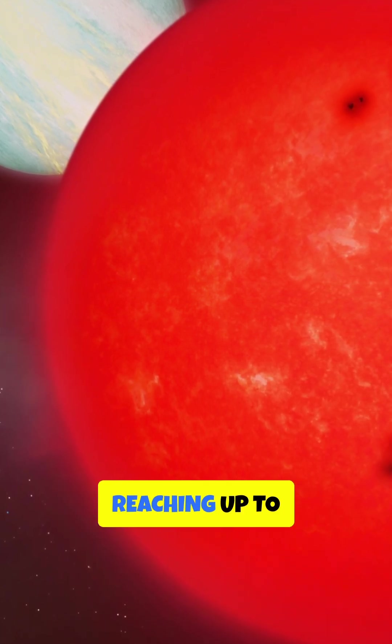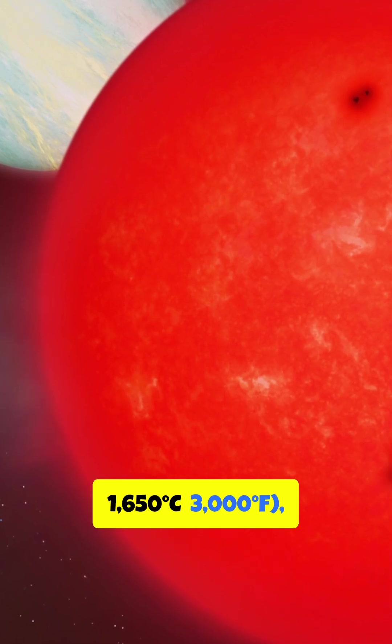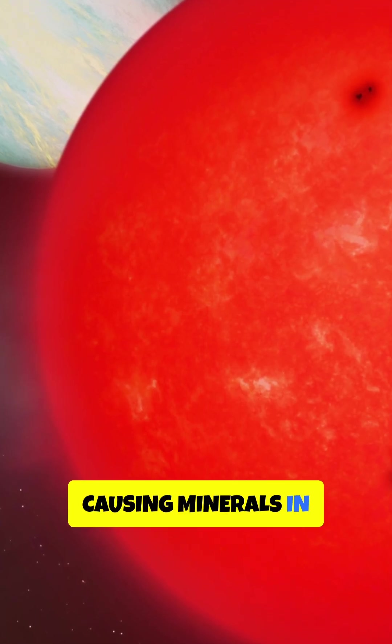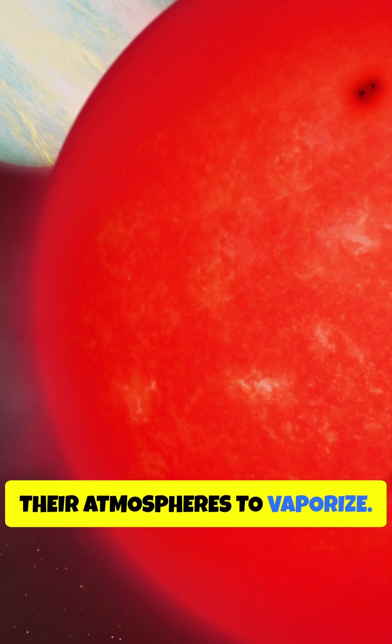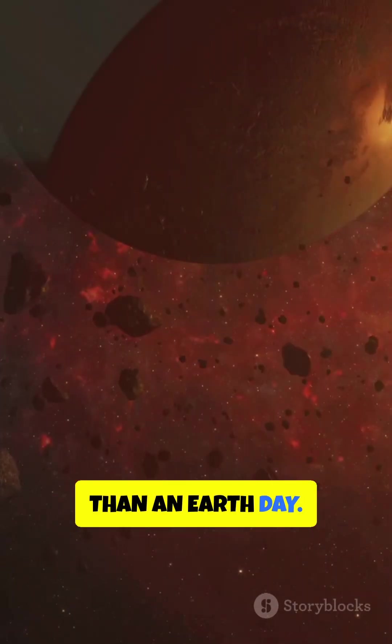Hot Jupiters have surface temperatures reaching up to 1,650 degrees Celsius, 3,000 degrees Fahrenheit, causing minerals in their atmospheres to vaporize. They orbit their stars so closely that a year for a hot Jupiter is shorter than an Earth day.